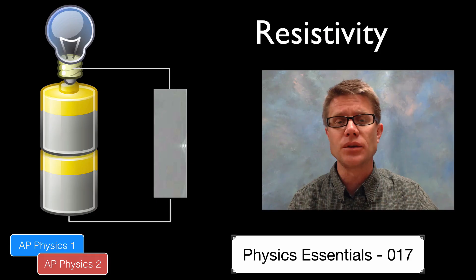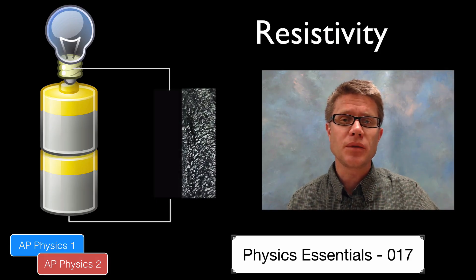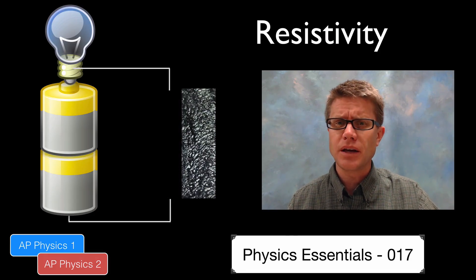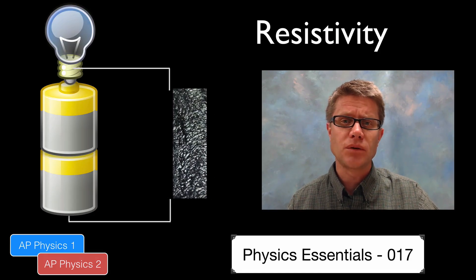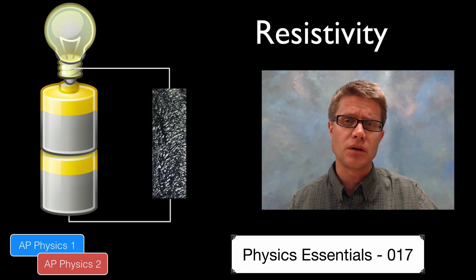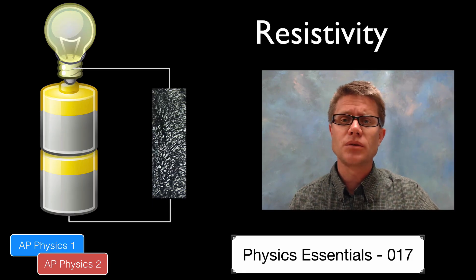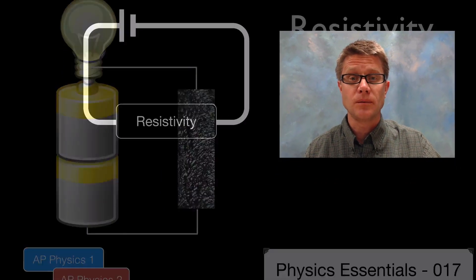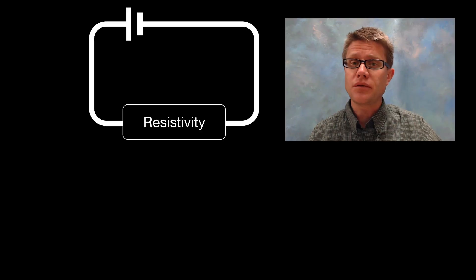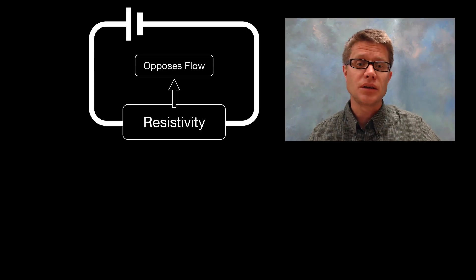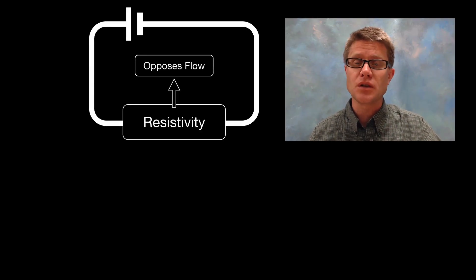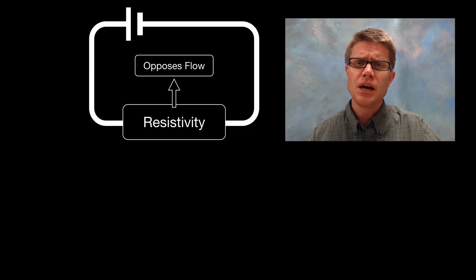So we would say gold has a really low resistivity — it's allowing that flow to move through it. If we were to try a different material like glass in our circuit, we would see that it's not lighting up, so it would have high resistivity. And if we were to take something in the middle, a semiconductor like silicon, we would find that some flow occurs, so its resistivity is going to be somewhere in the middle. Essentially, resistivity is a property of material that opposes electric flow or flow of charge.